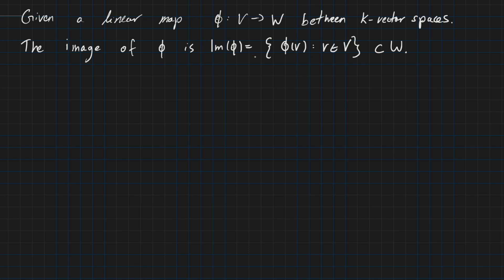Today we are again looking into linear maps between vector spaces V and W, and these are k vector spaces. So k is a field, for example the real numbers or the rational numbers. And we are looking into the image of phi, which is defined as all vectors inside W we can obtain by applying our linear map phi on all elements v of the vector space V.